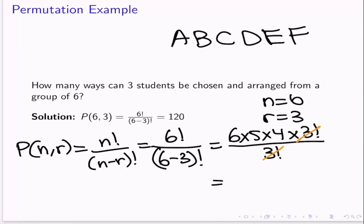Six times 5 is 30, and 30 times 4 is 120. So yes, the answer is 120. There are 120 different ways to select three students and arrange them, giving us 120 different possible arrangements in this example.